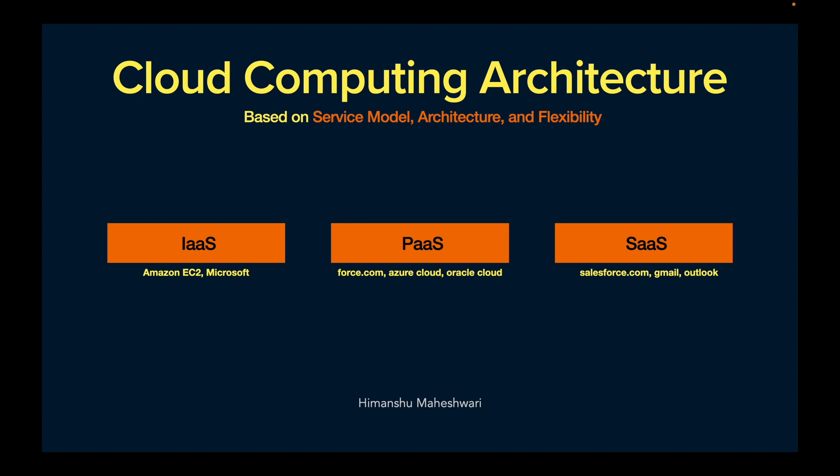The first is Infrastructure as a Service, called IaaS. Examples are Amazon EC2 and Microsoft. They take care of the core infrastructure, and you have to worry about the platform and the applications you build on top of it. Amazon EC2 stores data for you, gives you compute space, and tells you to build your platform and applications on top of it. Just pay for the infrastructure and they will manage and maintain it for you.